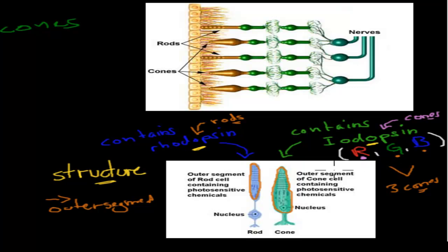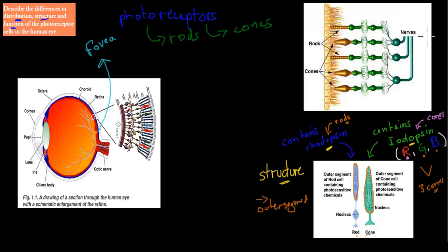So in terms of structural difference, remember the outer segment looks different — one has the shape of a cone, that's the cone cell; the other one has the shape of a rod, and that's the rod cell. Also, light comes in this way through the retina, passes through all the different types of nerve cells, then hits the rod and cone cells all the way at the bottom of the retina. The last layer of the retina is the rods and cones — they change the light into an electrical impulse, and then that impulse is sent back toward the brain.